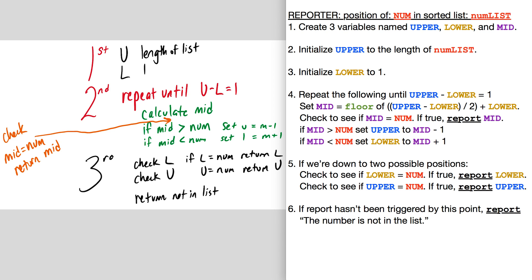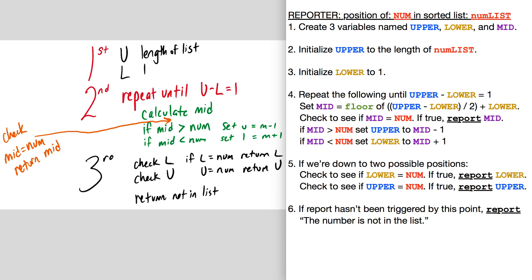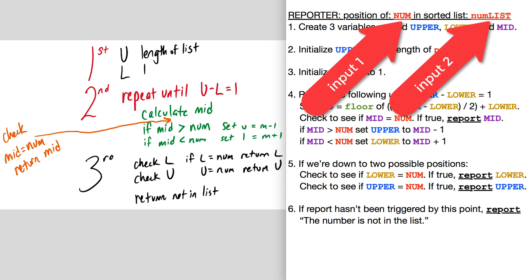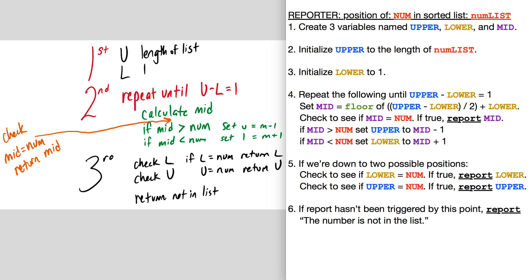I've gone ahead and cleaned up what I wrote on the left and put it on the right side, typed it up with some colors. We can see that we're creating a reporter block called 'position of num in sorted list num list.' This reporter block will have two inputs: num and num list. Num is what we're looking for within our num list, and keep in mind the num list must be sorted — if it's not sorted, this algorithm will not work.